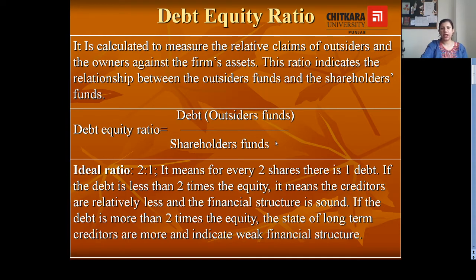Shareholder funds are calculated by adding equity share capital, preference share capital, reserves and surplus, and accumulated profits. From this total, we deduct any fictitious assets and accumulated losses if there are any. By calculating debt and shareholder funds, we can calculate the debt equity ratio. The ideal debt equity ratio is 2:1.